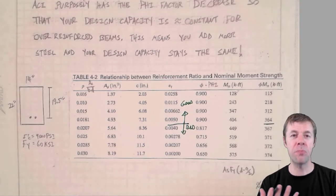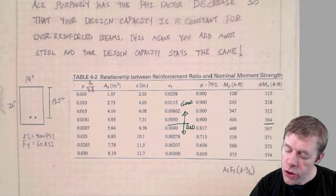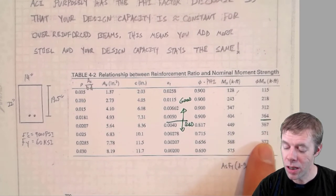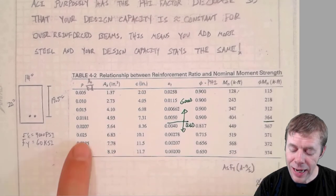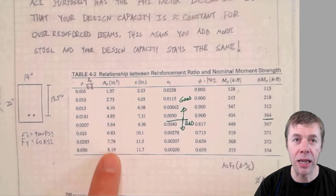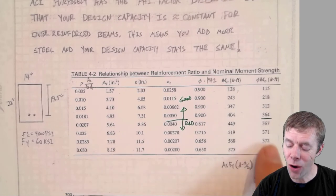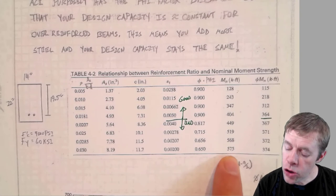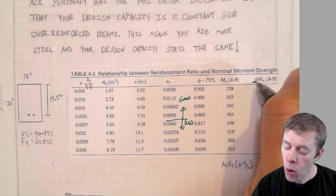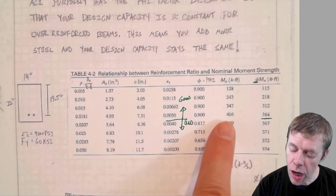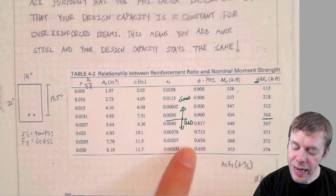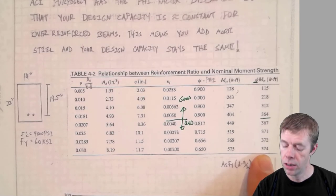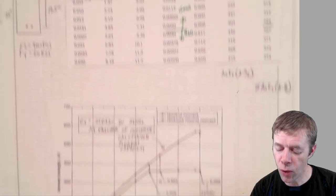So how do they penalize you for being bad? How do they penalize you for making structures that aren't ductile? Notice, look at our capacities. They're not going up. I mean, look, we're adding steel like crazy. Look how much steel we're adding. And the capacities are not going up. Your calculated capacity goes up. But once you put the fee factor on it, once you put the safety factor on it, as this goes up, this is going down. They offset each other and you don't get much capacity.